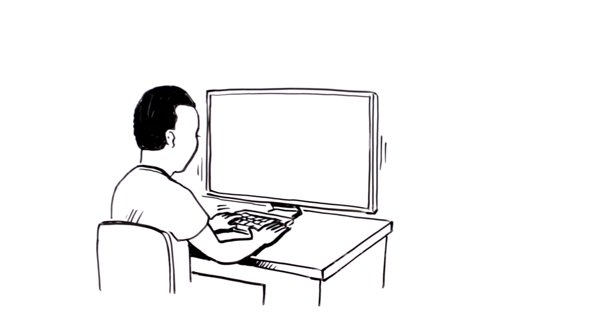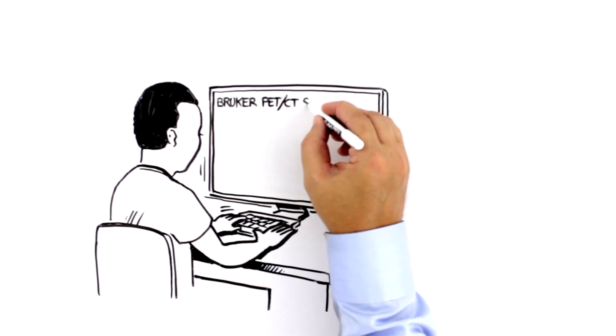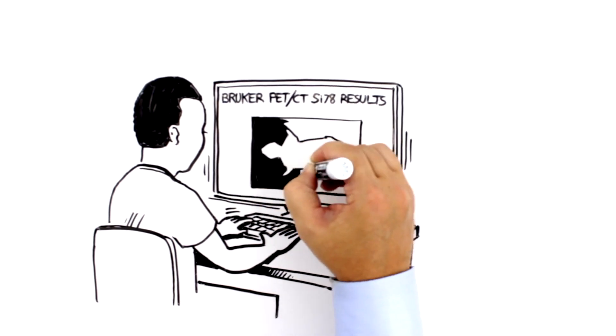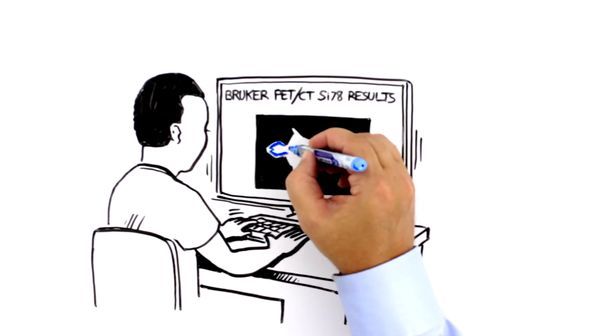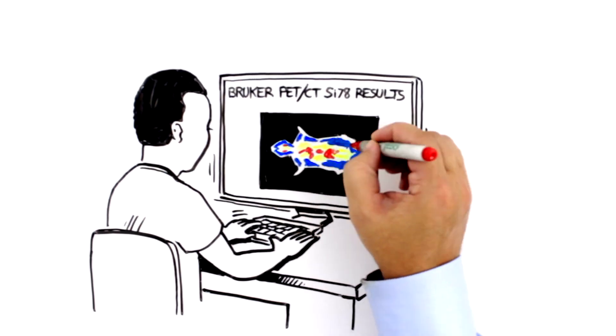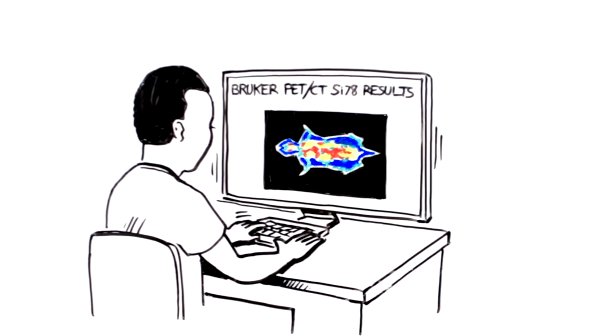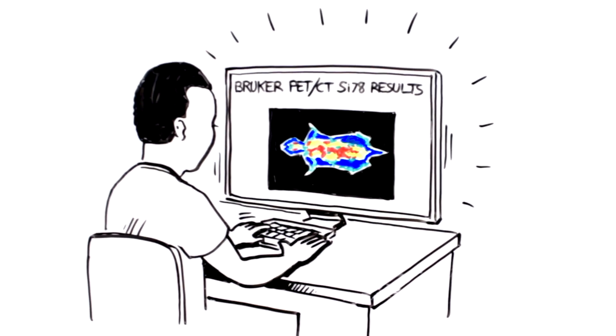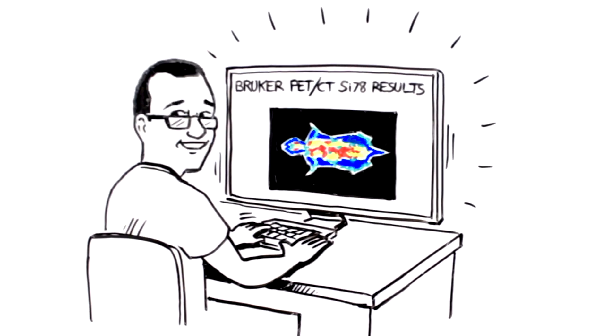Then Greg found the complete solution, the Bruker PET-CT SI78. With its perfectly clear images, Greg can see the finest details in every organ. And, Bruker PET-CT SI78 offers total body PET for small animals, a full field of view accuracy that allows precise quantification.